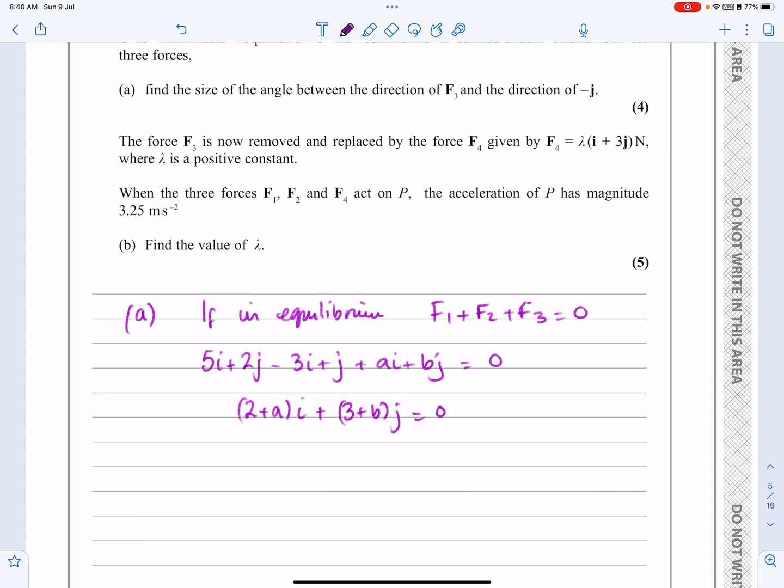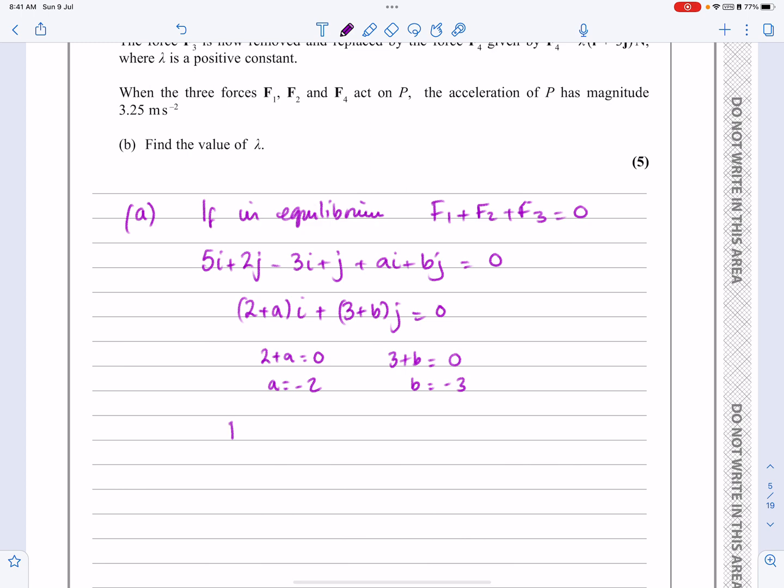Now, we know that this is 0, so that means that 2 plus A must be equal to 0. So in other words, A is minus 2. And 3 plus B must be equal to 0. So B equals minus 3. So what that means is that F3, which is AI plus BJ, is minus 2I minus 3J.